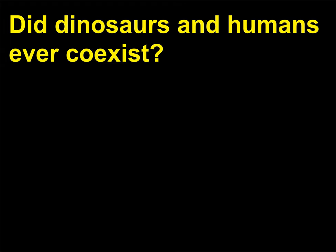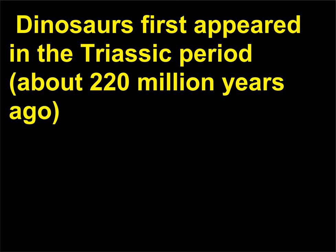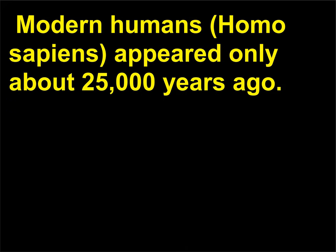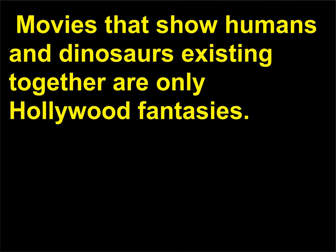Did dinosaurs and humans ever co-exist? No. Dinosaurs first appeared in the Triassic period, about 220 million years ago, and disappeared at the end of the Cretaceous period, about 65 million years ago. Modern humans, Homo sapiens, appeared only about 25,000 years ago. Movies that show humans and dinosaurs existing together are only Hollywood fantasies.